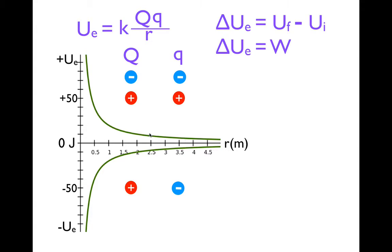You might be wondering: how come sometimes we have positive potential energy and sometimes negative? With gravitational potential energy, we don't have negative — but that's because with gravitational PE, you only have attractive forces. When you calculate electric potential energy, the equation is U = K times charge 1 times charge 2 divided by the distance between them. You have to use the negative and positive signs. When we calculated Coulomb's law, we didn't use the signs on the charges, but when you calculate electric potential energy or potential difference, you have to use the negative and positive signs.